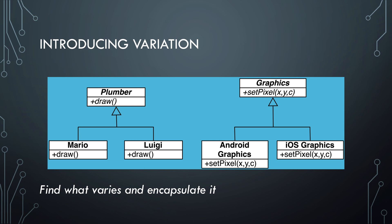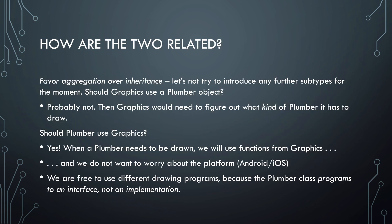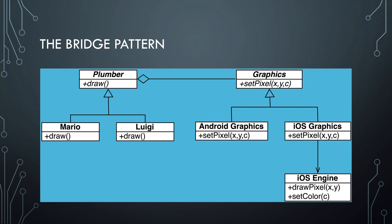This is what you get. We have two separate sets of variations encapsulated by abstract classes. Now let's think about how plumbers and graphics are related and follow the principle: favor aggregation over inheritance. Should graphics use a plumber object? Probably not, because graphics doesn't know what kind of plumber it has to draw. The other way around — plumber does use graphics — so that makes more sense. If we draw a plumber, it uses functions from the graphics platform. We can use different graphics platforms because the plumber class will program to an interface, not an implementation. And here we are with the final design of the bridge pattern: two variations, plumbers and graphics, coupled by a bridge where one abstract class uses the other.